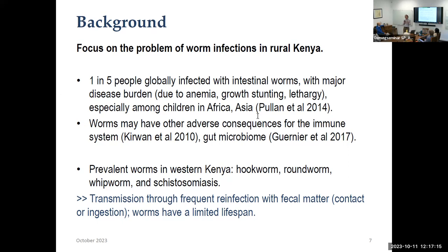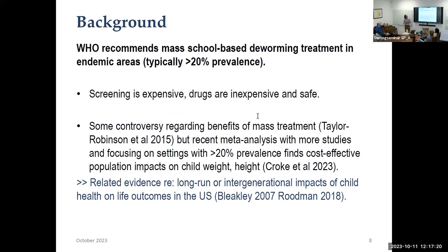Because worms are an infectious disease, the spillovers of treatment could be very important. If I'm no longer getting reinfected, the worms in my body will die off and I'll become healthy — so other people's treatment choices could directly affect me. That was a central methodological focus of the earlier work. The WHO has long recommended mass treatment for worms if there's even a minimum prevalence level around 20 percent. The reason is that screening is expensive — requiring stool samples and lab analysis — but the drugs are cheap with very minimal side effects, so if there's even minimal prevalence, there should be mass treatment.